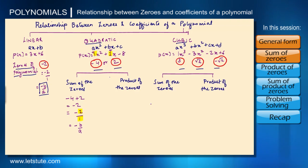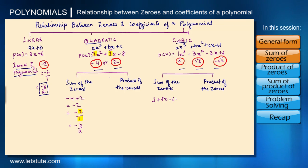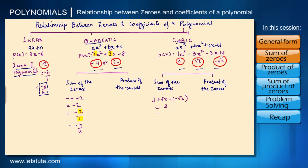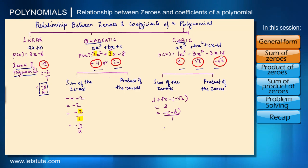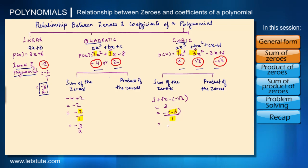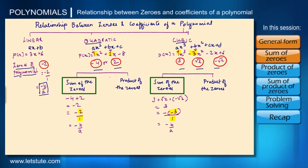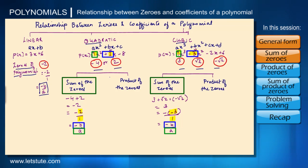The sum of the zeros for the cubic polynomial would be three plus root two plus minus root two, which equals three. Three can also be written as minus of minus three upon one, where minus three is the coefficient of x squared and one is the coefficient of x cubed. So this is also minus b upon a. Basically, the sum of the zeros in both quadratic and cubic is the ratio of the coefficient of the second term to the first term.